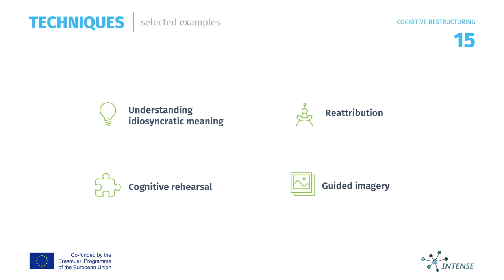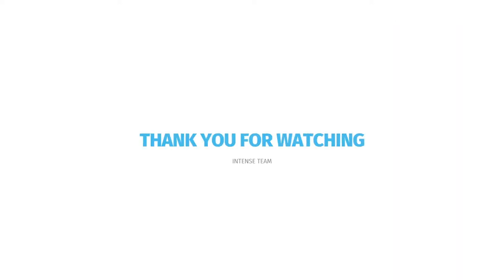Some more techniques include: Understanding the idiosyncratic meaning, which is a skill to get to the bottom of the client's problem when they use vague language, particularly in cases of depression. Re-attribution, a technique in which the client is encouraged to consider possible alternate causes of events. Cognitive rehearsal, where the coach and client work together to find ways a certain problem can be handled, rehearsing how to deal with a particular situation so the client is better equipped when such situations arise. Guided imagery, where the coach helps the client evoke and generate mental images that simulate or recreate a situation.